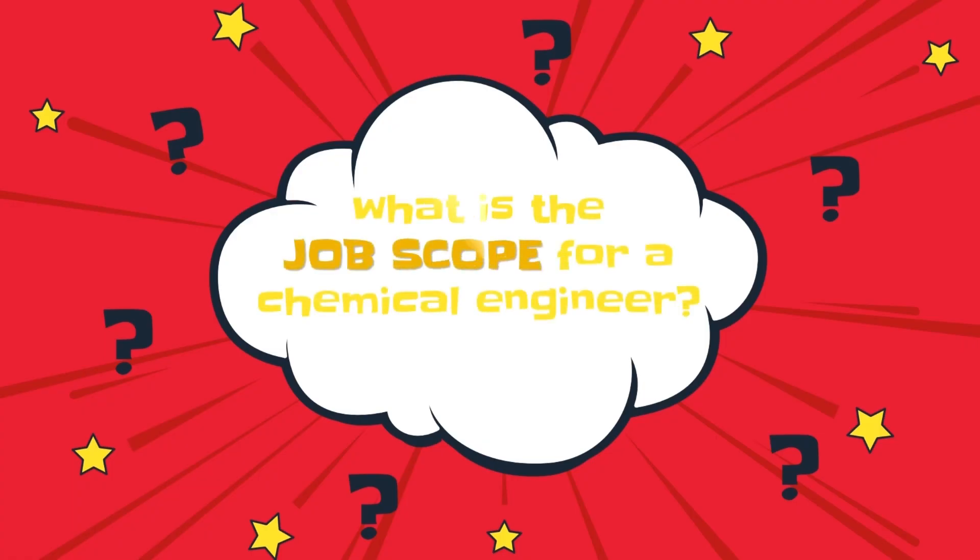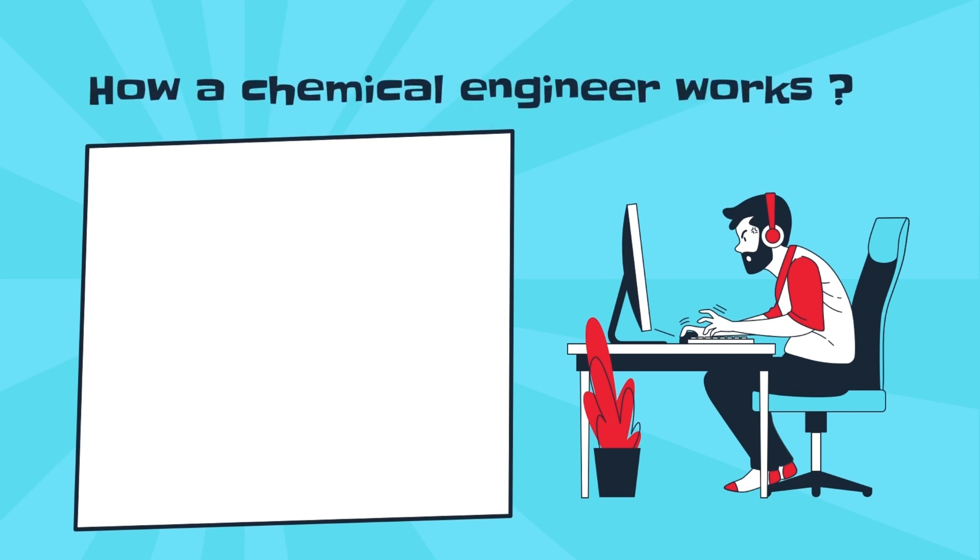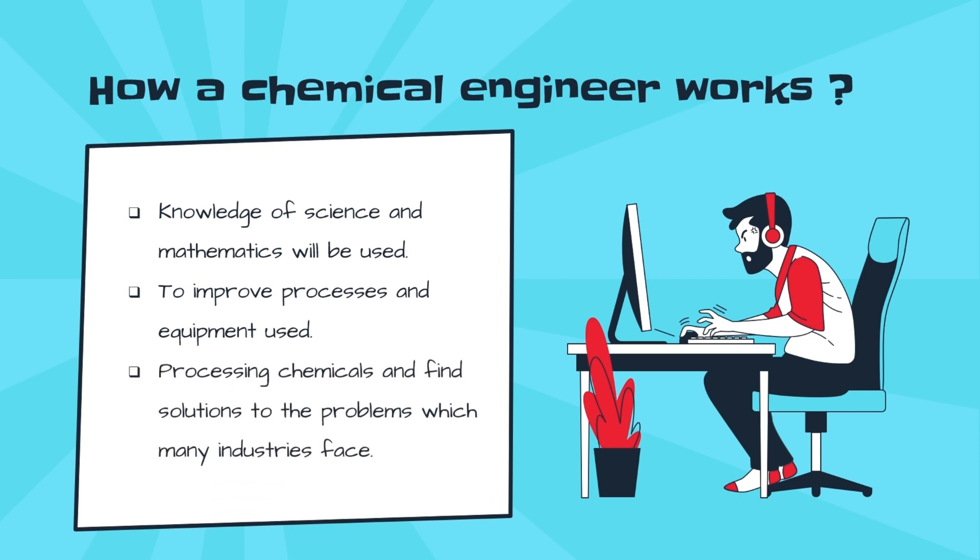Do you know what is the job scope for a chemical engineer? No worries. Before this, I will tell you about how a chemical engineer does a job. In fact, the knowledge of science and mathematics will be used to improve processes and equipment used in processing chemicals.